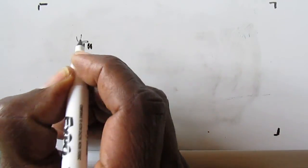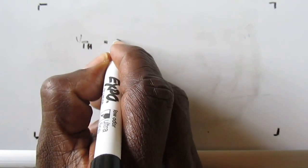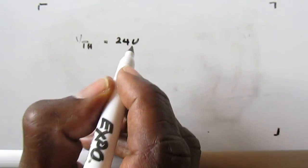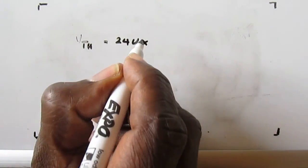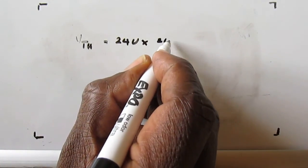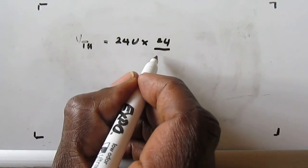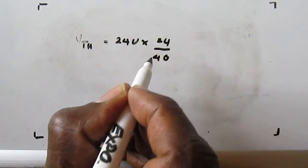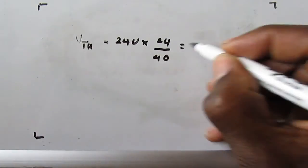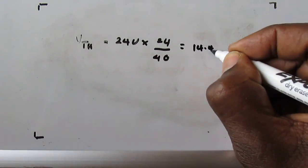So, following the previous example, now the Thevenin voltage, VTH across the diode would now be equal to 24 volts multiplied by the load resistance value divided by the sum of the load resistance and the series resistance, which we found out to be 40 ohms. And that works out at 14.4 volts,